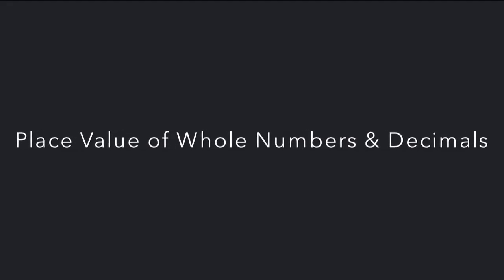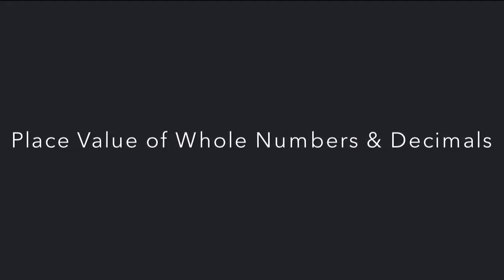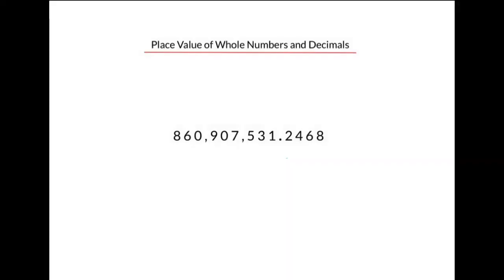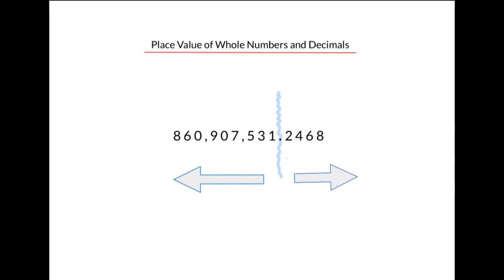Let's explore place value of whole numbers and decimals. To start, we'll bring in a number — a big number which has a decimal in it. This decimal acts as a divider between the whole parts of a number to the left of the decimal and the fractional parts of the number to the right of the decimal.